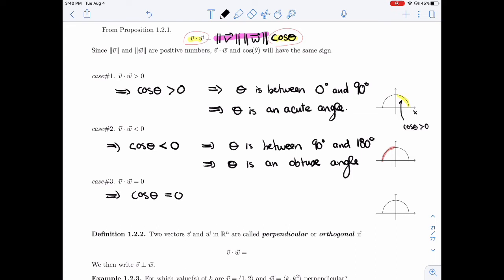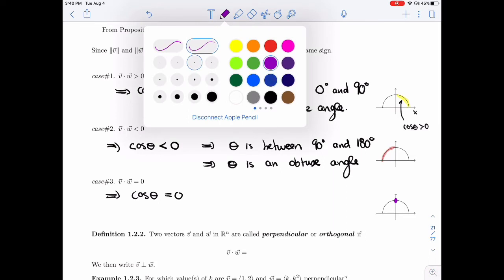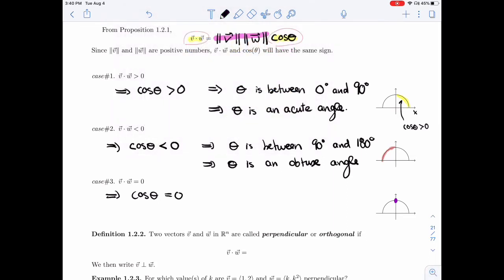And that happens only at this point, right, on that top half. It's only at 90 degrees. So this is where the angle, and so theta is a right angle.